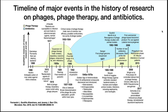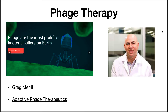Phage therapy is making a comeback because of the emergence of bacteria that are resistant to all known antibiotics. I attended a talk by Greg Merrill on his company, Adaptive Phage Therapeutics. Phage are the most prolific killers on Earth. The company is isolating phage for all known important pathogens of humans, and they've been able to stockpile half a dozen to a dozen phage that will kill every important pathogen. This shows you that there is a virus for every organism.